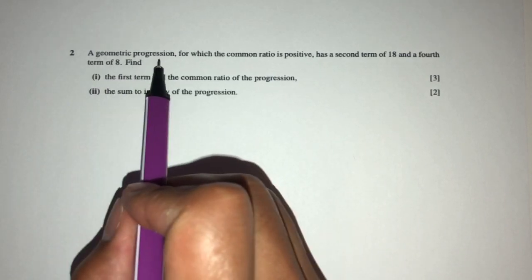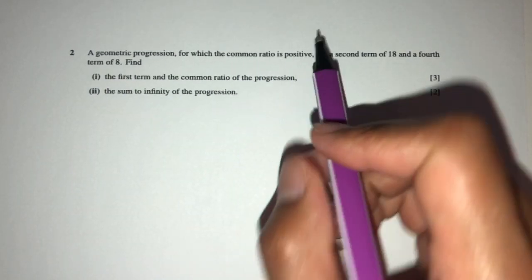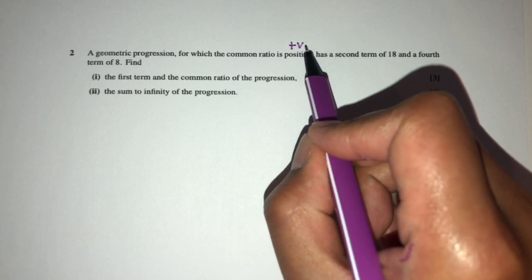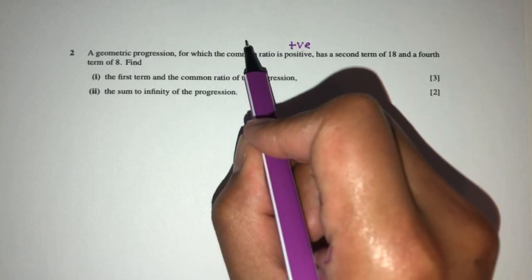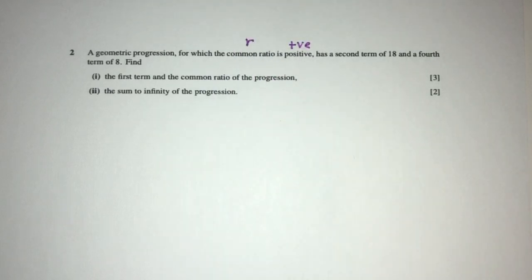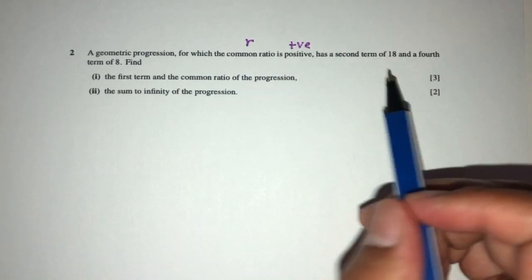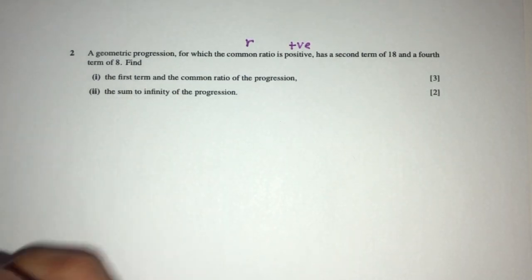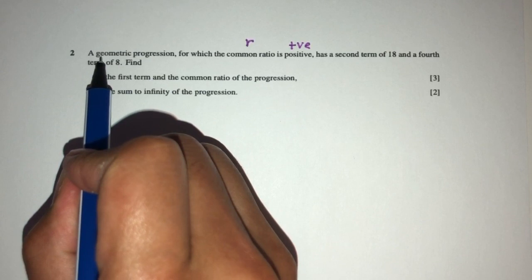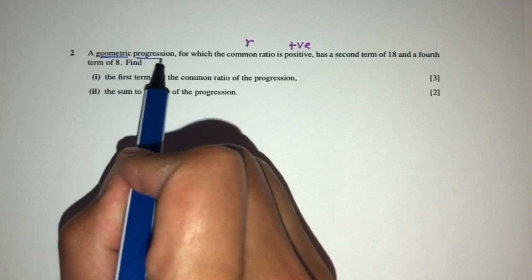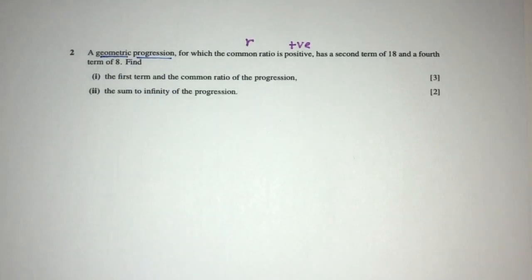Here we have a geometric progression for which the common ratio is positive, so we know this is positive, and the common ratio is simply the value of r. We have to know this. Now, we know that the type of progression we have to work with is a geometric progression. That is a very good thing. That's the first step, that we have to know what kind of progression we have for the question.